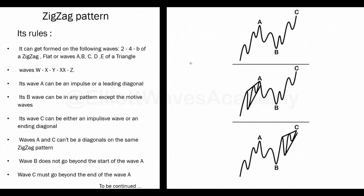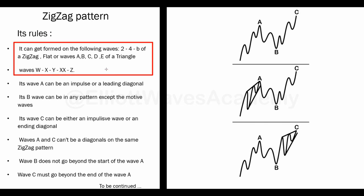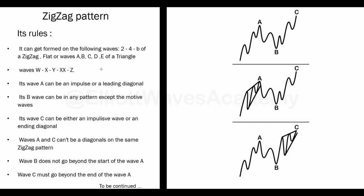There are some rules that should be respected to be able to say that we are in front of a zigzag pattern. Let's start with the first one, which speaks about the location of this pattern — where we can see it. We can see the zigzag in wave 2 and wave 4 from an impulsive wave, or wave B from a zigzag, or wave B from a flat, or waves A, B, C, D, and E from a triangle pattern. We can also see it in waves W, X, Y, XX, and Z from the combination wave and complex pattern, as we will see later.